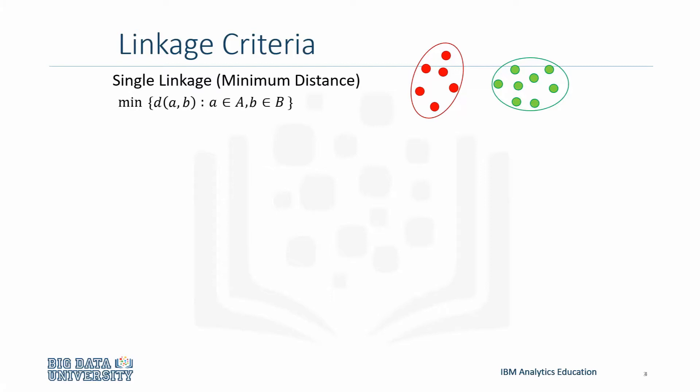As you might imagine, there are multiple ways we can do this. The first one is called single linkage clustering. Single linkage is defined as the shortest distance between two points in each cluster.